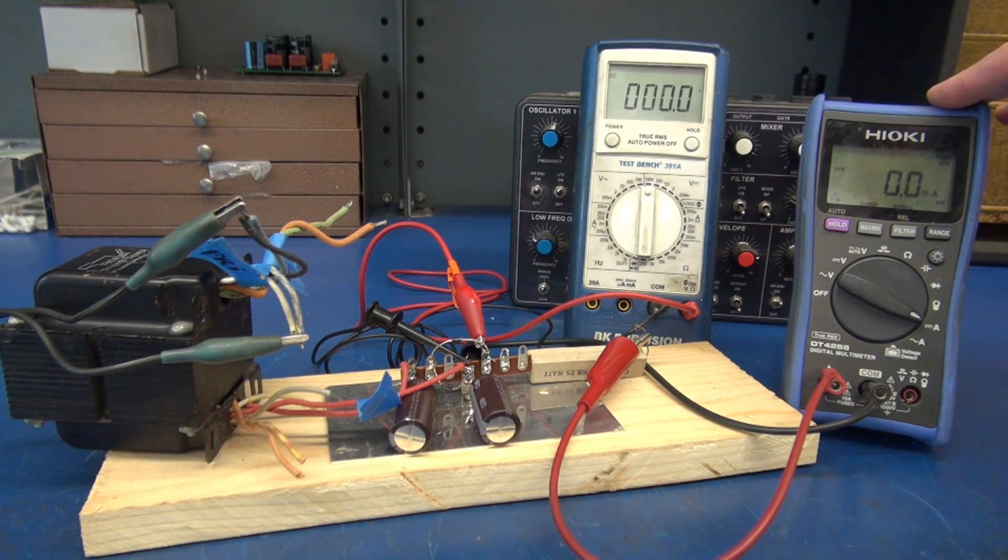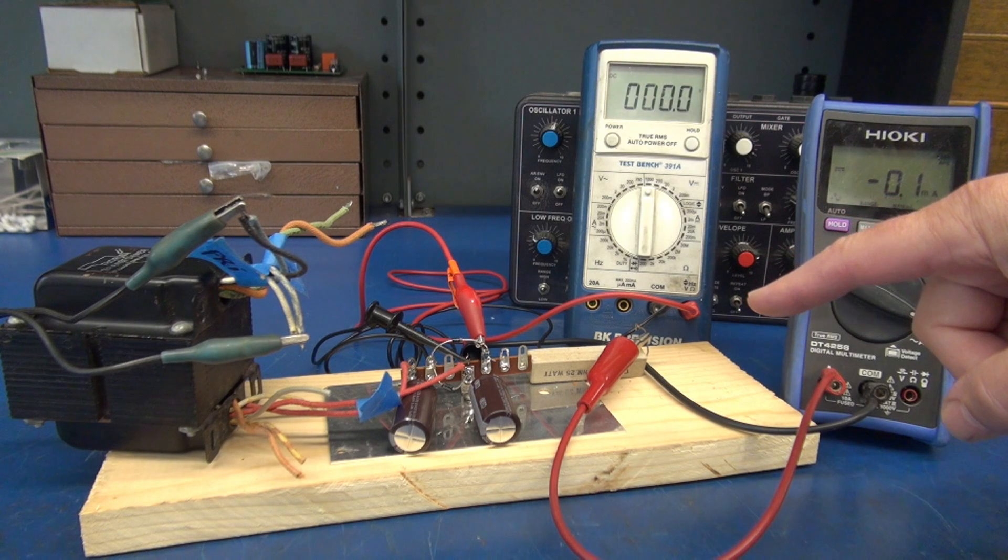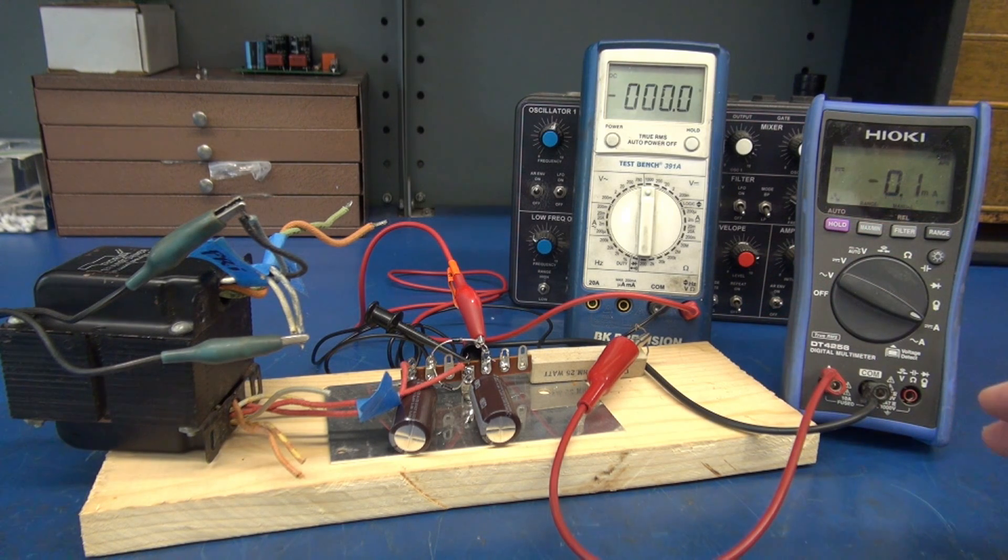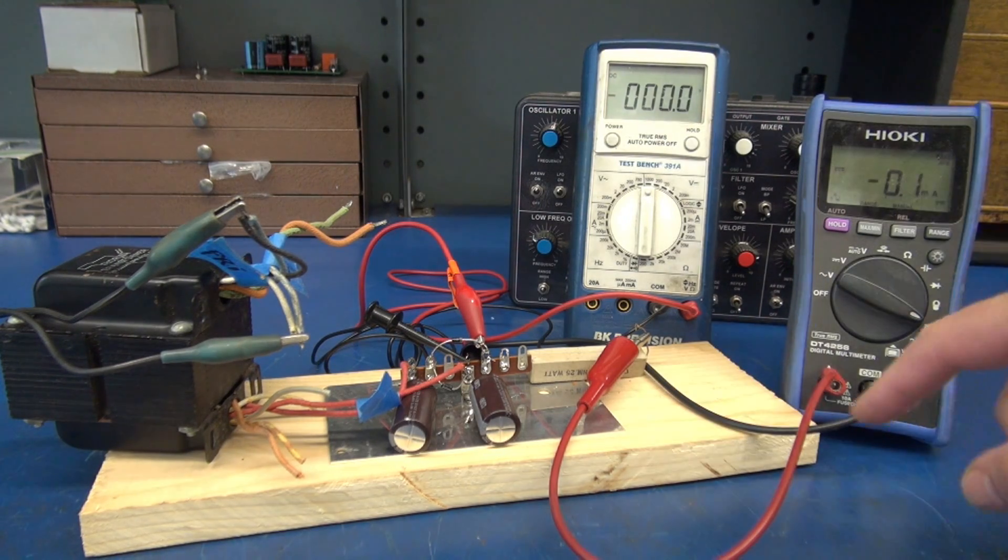So you will see the DC voltage on this meter and on this meter we're going to actually monitor the current through the circuit to see if it can really deliver the milliamps required to drive a 6V6 tube. You're going to see approximately 300 volts here.